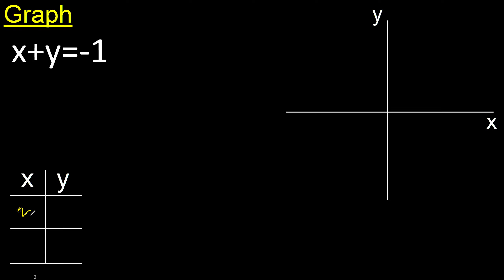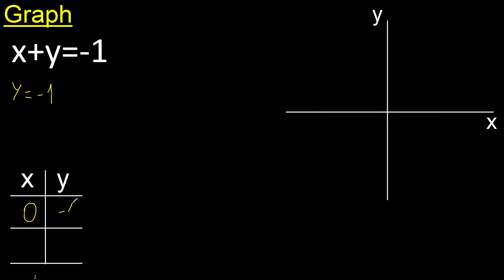Here any number or here any number. For example, x is 0: 0 plus y is y, equal minus 1. Here any number or here any number. For example, y is 0: y, 0 plus x is x, equal minus 1.